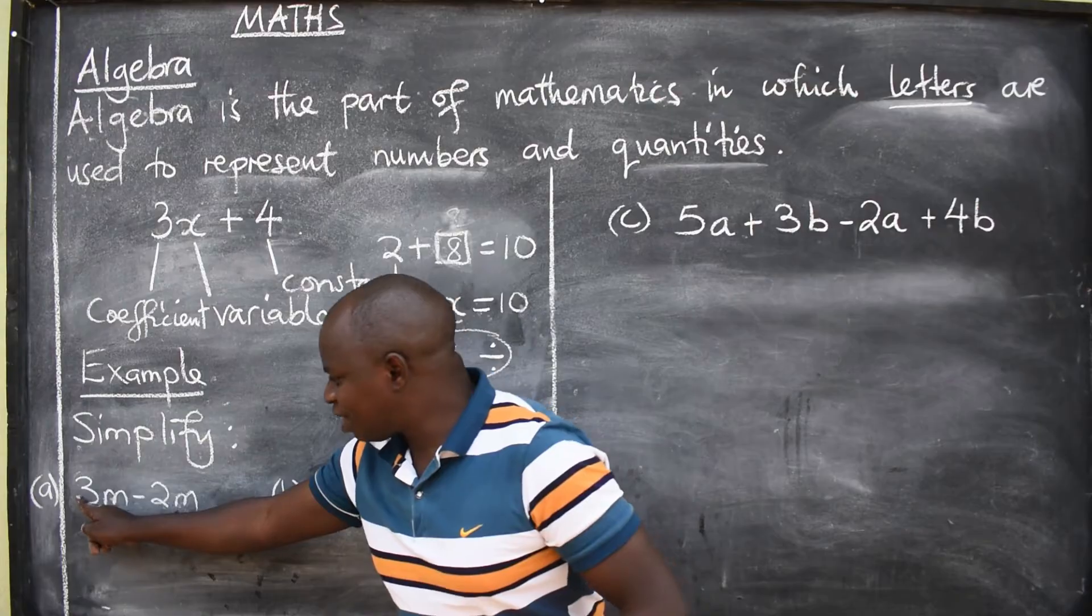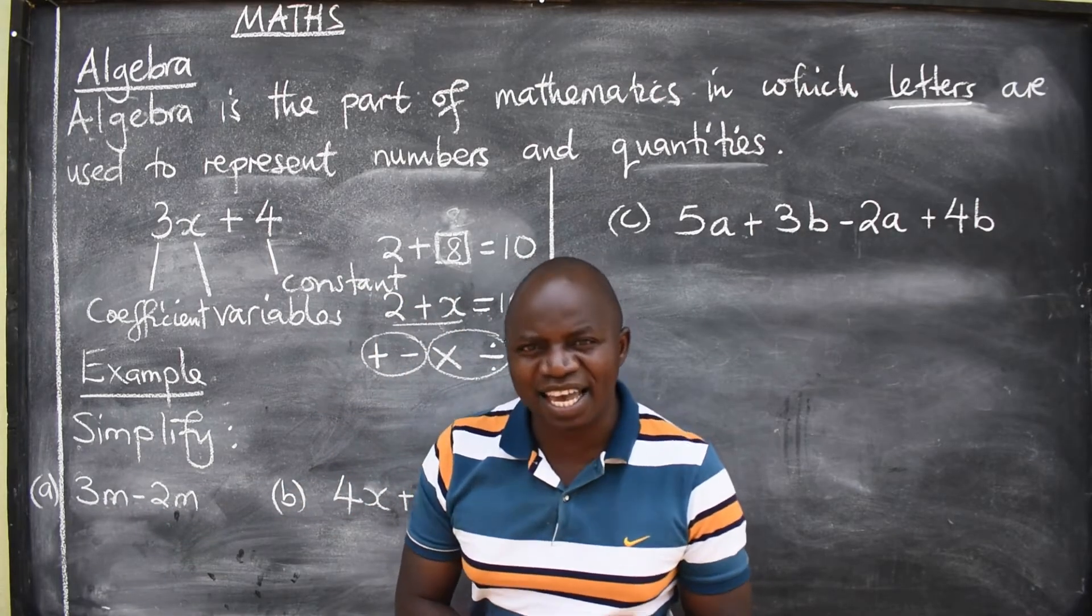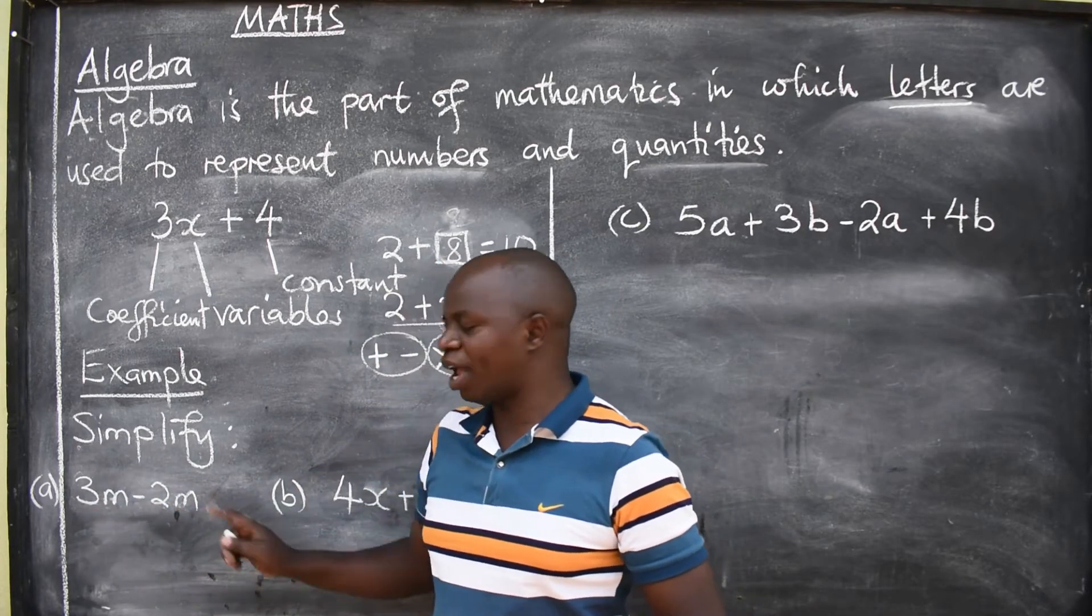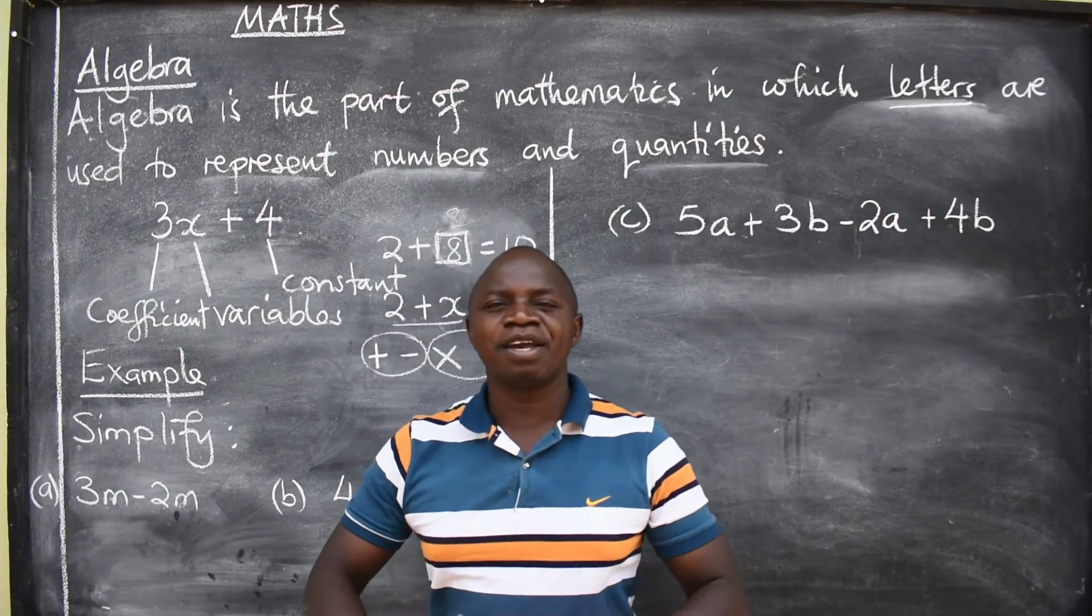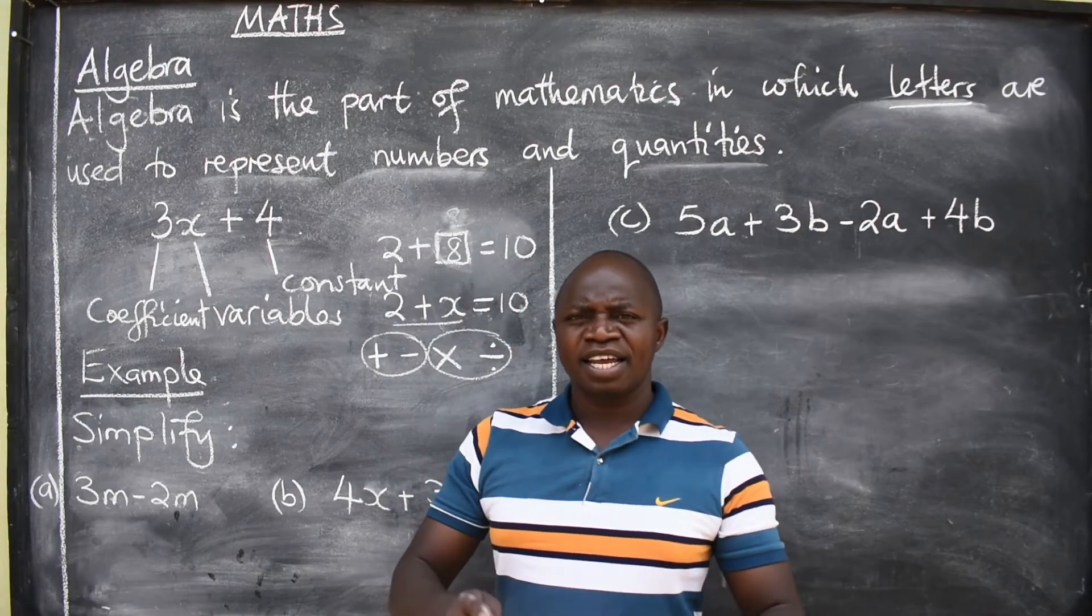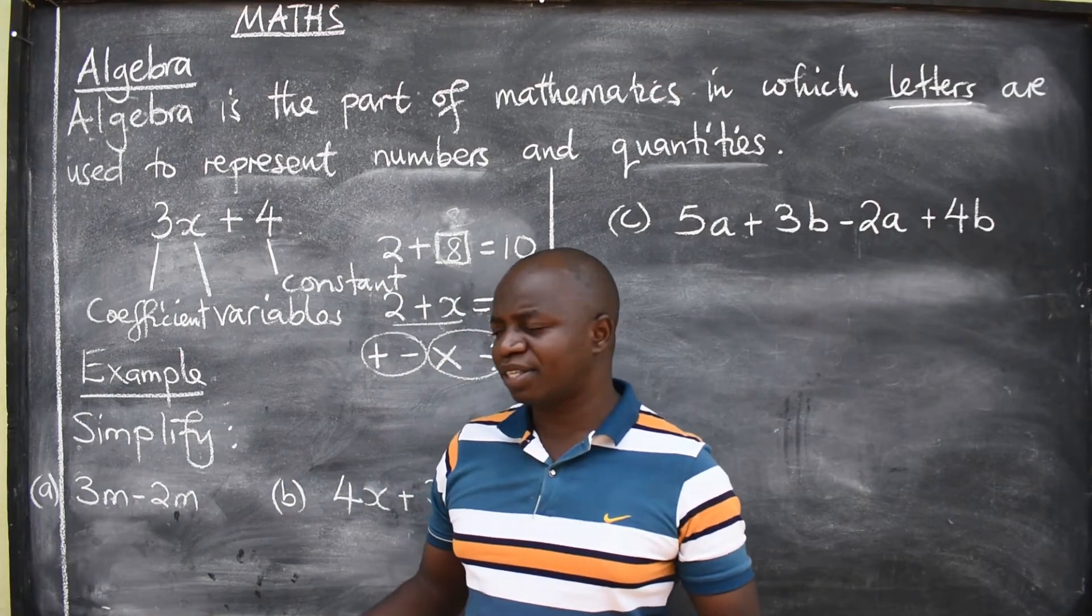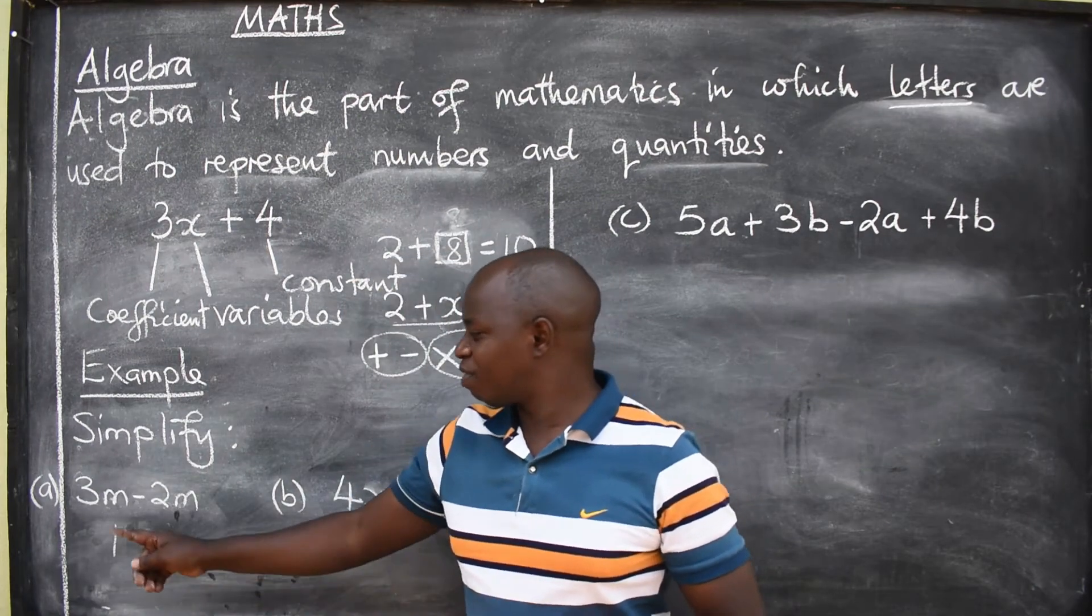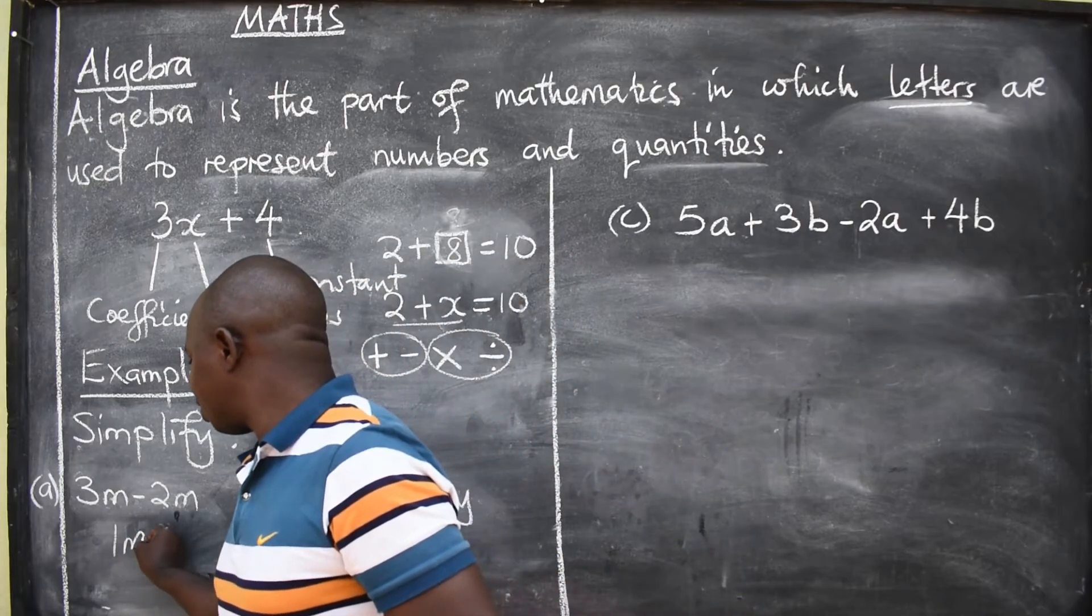Look at this. I have 3M minus 2M. Are they like terms? The answer is yes. There's M here, there's M here. 3M, 2M. Therefore, they are like terms. In this case, you can proceed and subtract. How do we subtract? You just say 3 minus 2. What's the answer? 1. The letter involved is M. So this will be 1M.